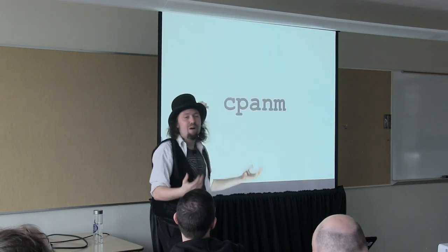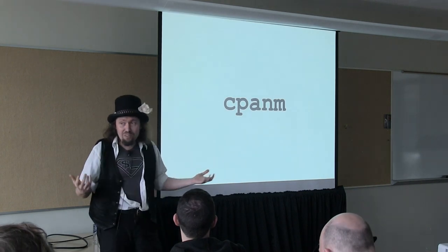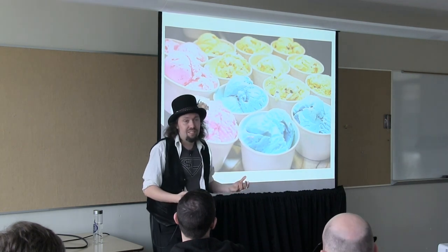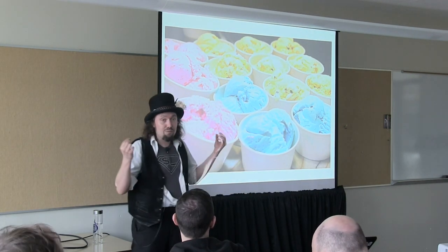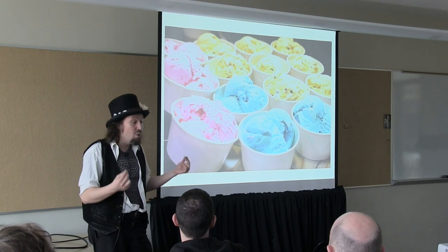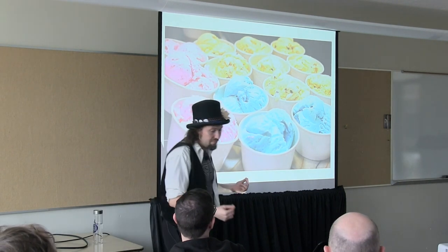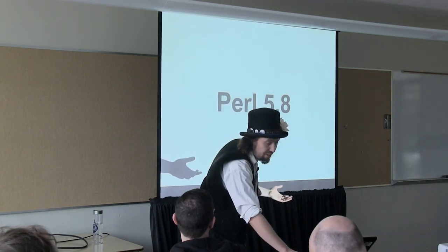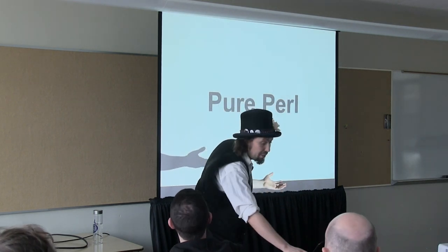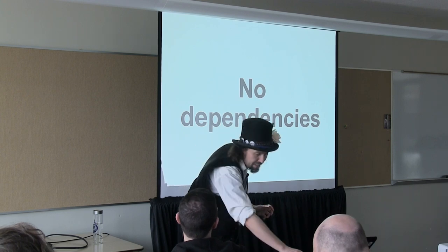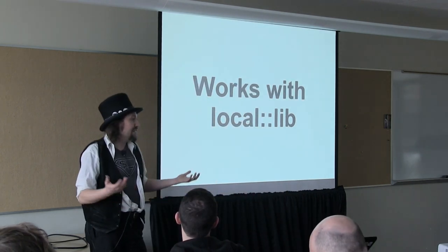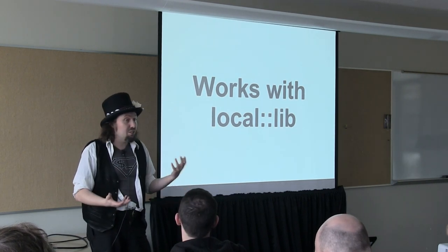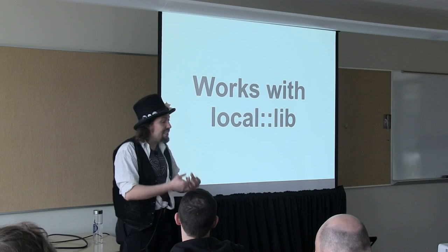There's this thing called cpanminus — cpanm — which hopefully some of you have used. I like cpanminus more than I like ice cream, and I'm absolutely serious. I would rather give up ice cream than give up cpanminus. cpanm runs on 5.8 and above, it's written in pure Perl, it's got no dependencies whatsoever, and it works with local::lib. If you haven't encountered local::lib, it lets you install all of your modules in a local directory, like inside your home directory, without any special privileges. You can even install them on a USB key.